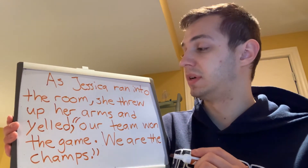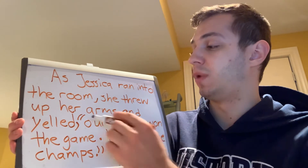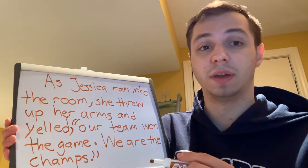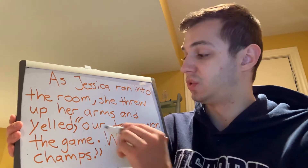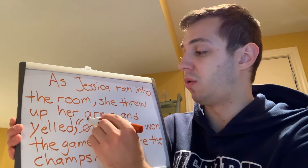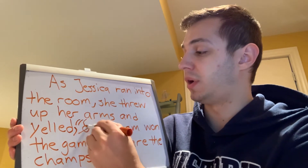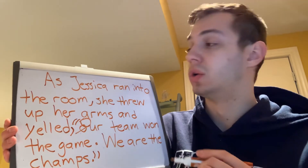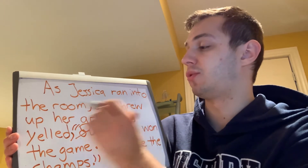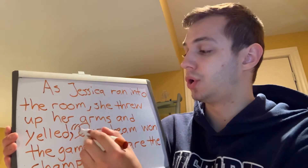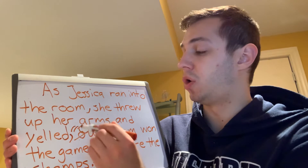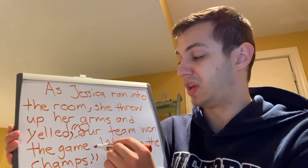One more thing that we're missing: whatever is in the quotation marks has to begin with a capital letter. So this O here is not a capital — I'm going to cross it out and put a capital O. So what it should say now is: as Jessica ran into the room, she threw up her arms and yelled, comma, opening quotation mark, capital O, our team won the game, period.